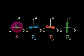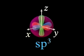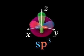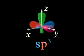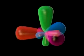Mixing of the s with all three p orbitals results in formation of four equivalent sp3 hybrid orbitals, directed toward the apices of a tetrahedron.